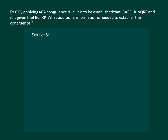Let us read the question. By applying the ASA congruency rule, it is to be established that triangle ABC is congruent to triangle QRP, and it is given that BC is equal to RP. What additional information is needed to establish the congruency?